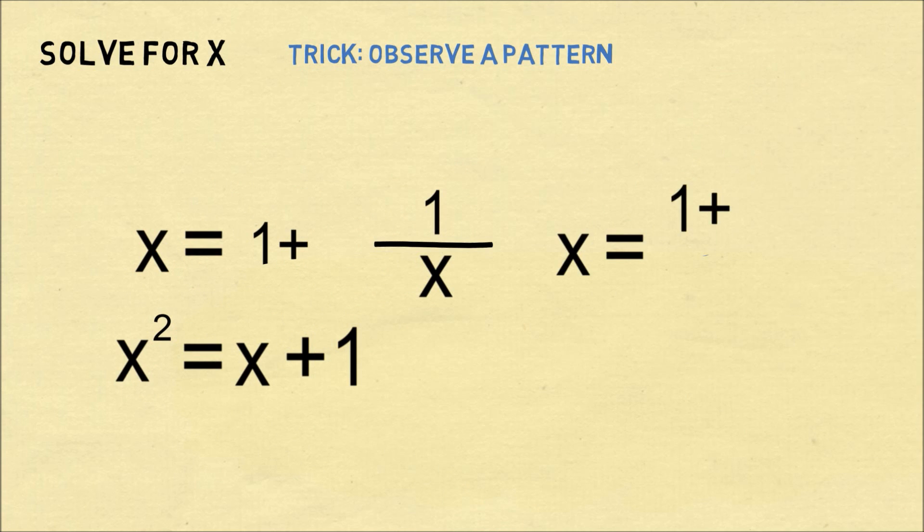We can solve this with the quadratic formula. x is equal to 1 plus or minus the square root of 5 over 2.